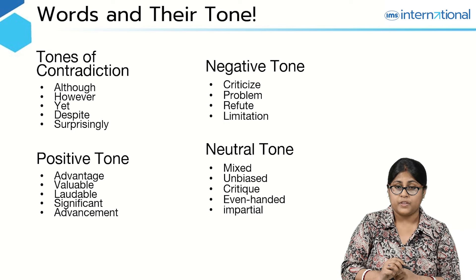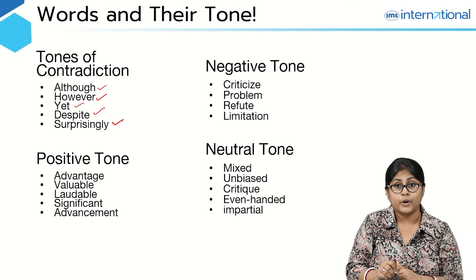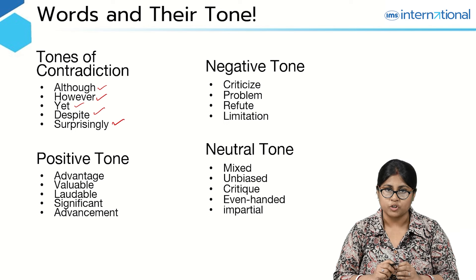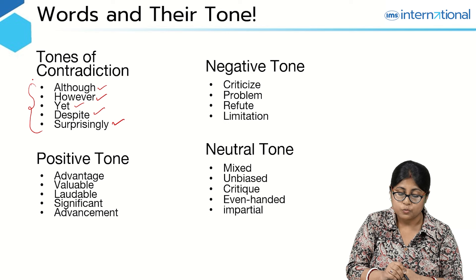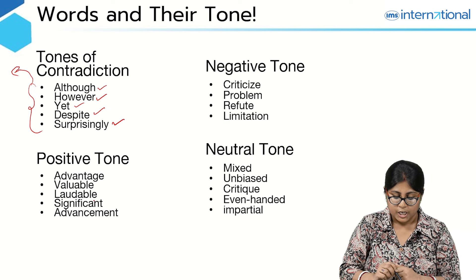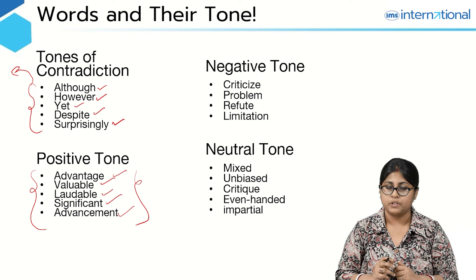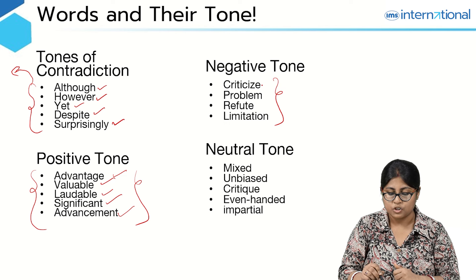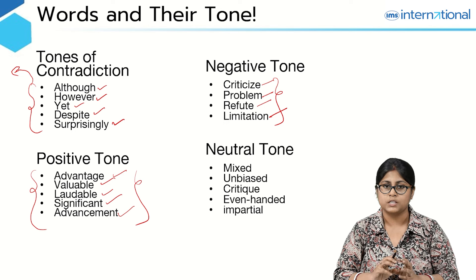Here are some words that help us identify the tonality of a passage. Words like 'although,' 'however,' 'yet,' 'despite,' and 'surprisingly' tell us there is some contradiction — whenever you encounter these in an RC passage, they suggest contradiction towards what was stated prior. Words like 'advantage,' 'laudable,' 'significant,' 'valuable,' and 'advancement' show the author is highlighting benefits. Negative tone words such as 'criticize,' 'problem,' 'refute,' and 'limitation' indicate disapproval towards an idea.